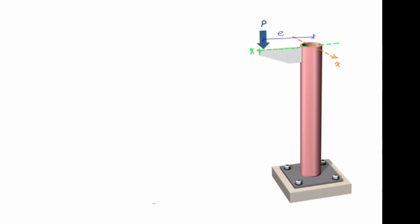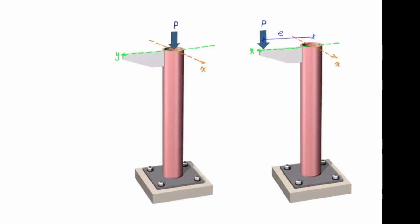If we move that force to the centroid, it acts as axial force in that column. But when we move a force, that movement causes a moment. This is what we have learned before in statics. How can we determine the value of that moment?